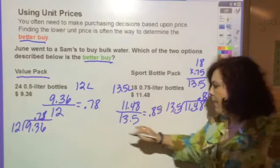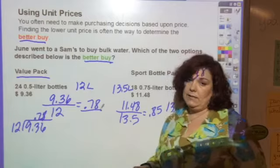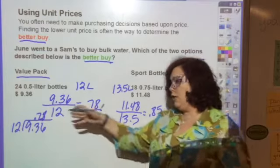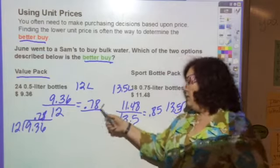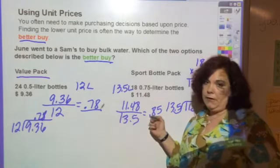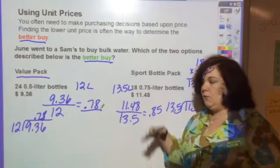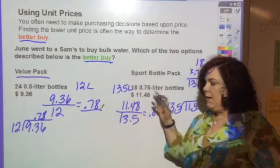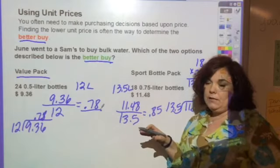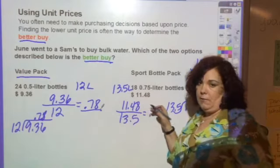So the better buy is of course the 78 cents, but you wouldn't know that just by looking at it because this is really very close—only 7 cents apart. So you have to do all the multiplying, dividing, making sure that you're using the same units to find the unit price.